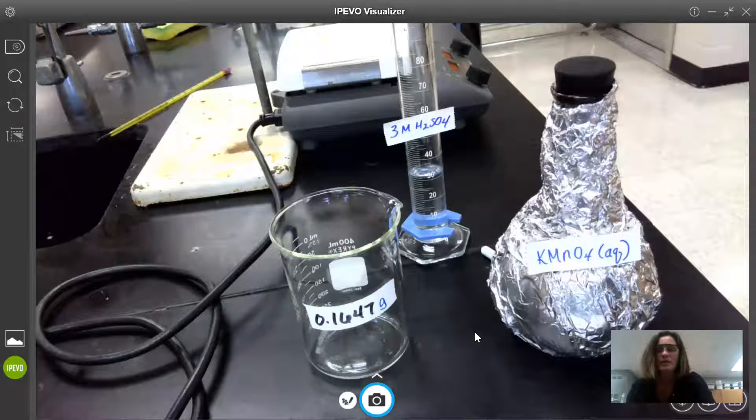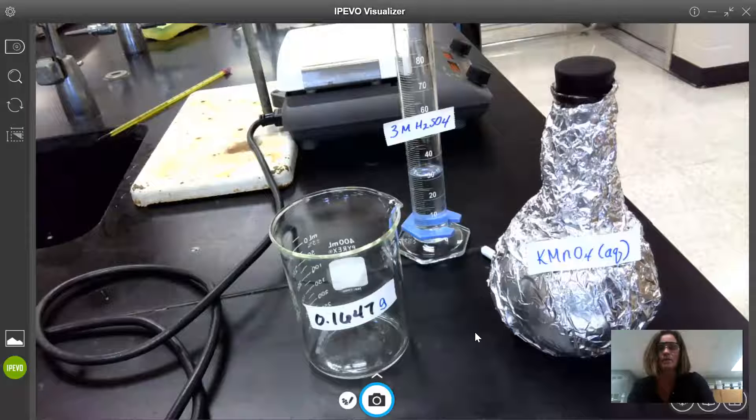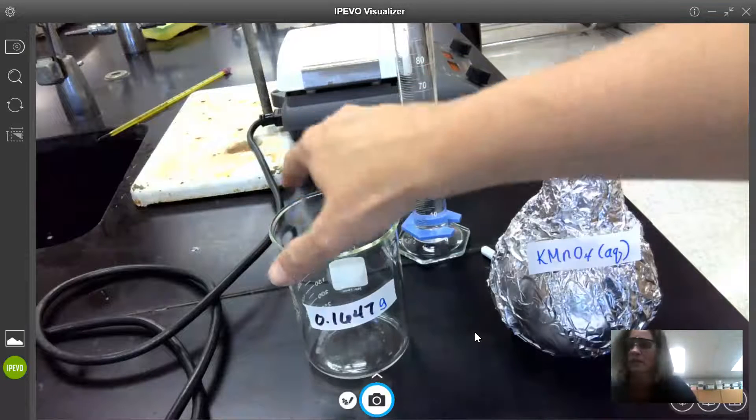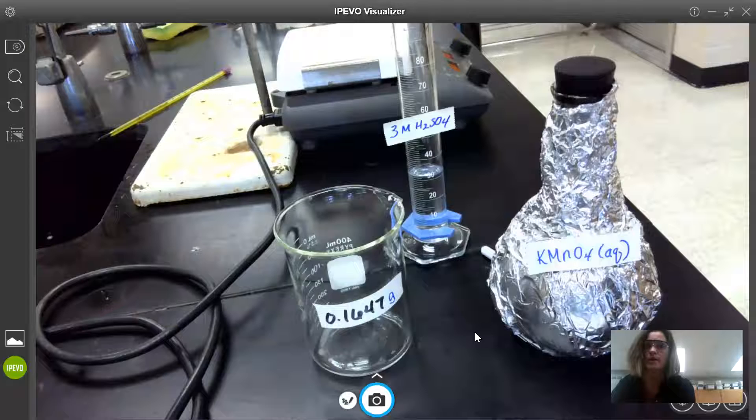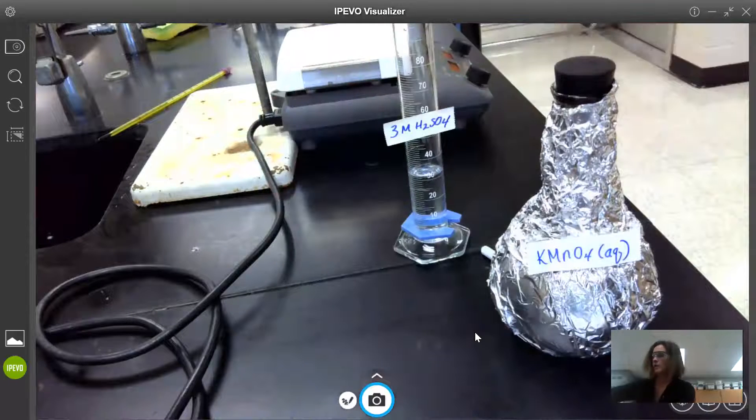So following instructions 8 through 15 in the lab handout. The first thing we're going to do with our sodium oxalate is to add about 200 milliliters of deionized water which I will get from the deionized water container.